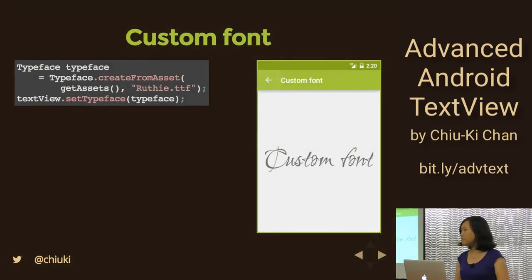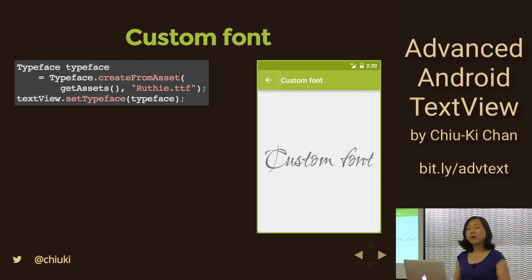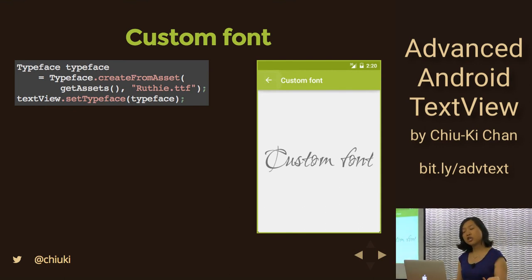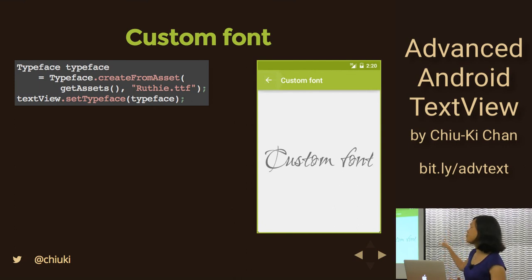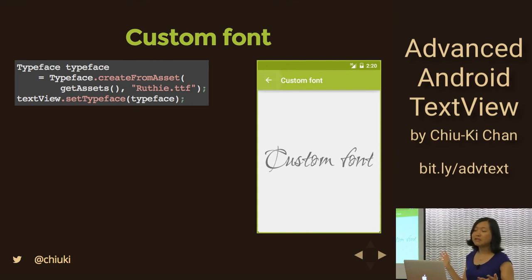Moving on, let's look at custom fonts. Custom font is a great way to add flavor to your app. The most straightforward way is to load a Typeface shipped with your app in the assets folder and then call setTypeface(). You may want to cache this typeface if you're using it multiple times so you don't keep loading it. I chose a really obnoxious font just to show it looks different — please don't do that in your app.